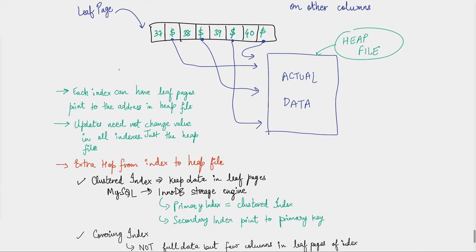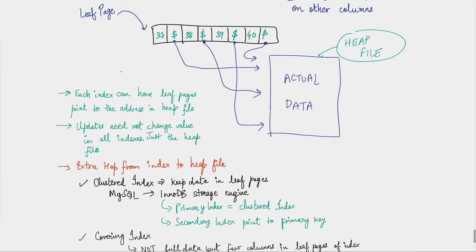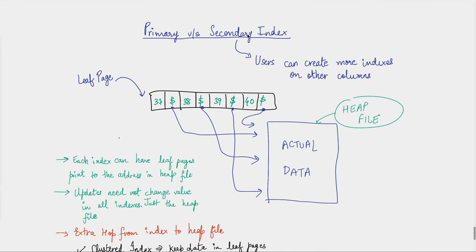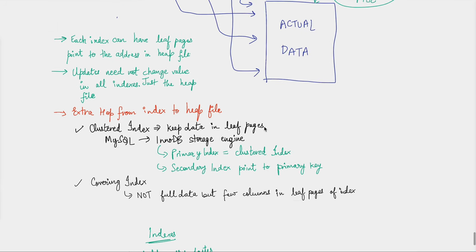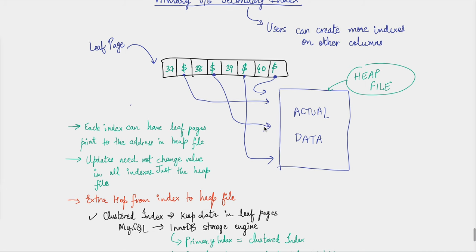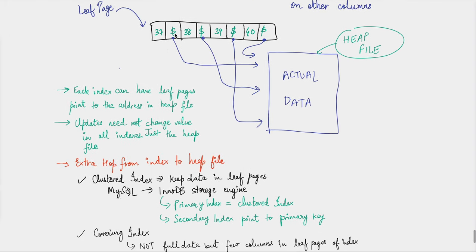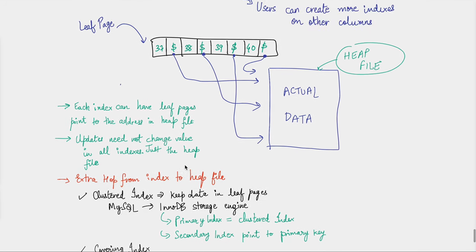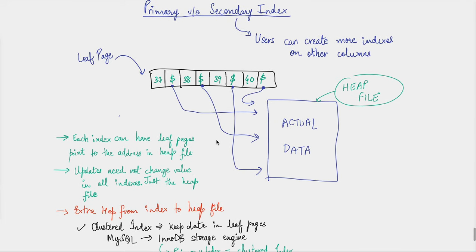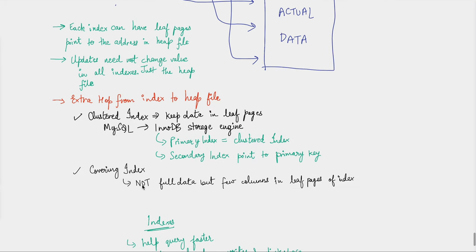A clustered index keeps data in leaf pages, and there's only one clustered index allowed per database. For secondary indexes, you don't use a clustered index — instead, in the leaf pages you store references to the primary keys, avoiding data duplication. However, this means that when you use the secondary index, you still need to make one more hop to the primary key. That's why there's also something known as a covering index, where you store not the full data but a few selected columns in the leaf pages of the index.